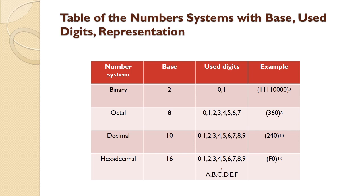Octal number system — its base is 8. That means there are only 8 numbers used in the octal number system, that is 0, 1, 2, 3, 4, 5, 6, and 7. For example, 3, 6, 0 in subscript 8 — since 3, 6, and 0 all fall within the range of 0 to 7, it is an octal number system.